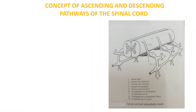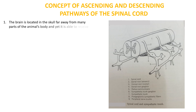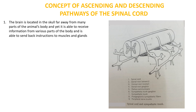Hello, welcome to this tutorial video where I explain the concept of ascending and descending pathways of the spinal cord. The brain is located in the skull, which is far away from many parts of the animal's body, and yet it is able to receive information from various parts of the body and send back instructions to muscles and glands. This information travels through the spinal cord in what are known as the ascending and descending pathways or tracts.